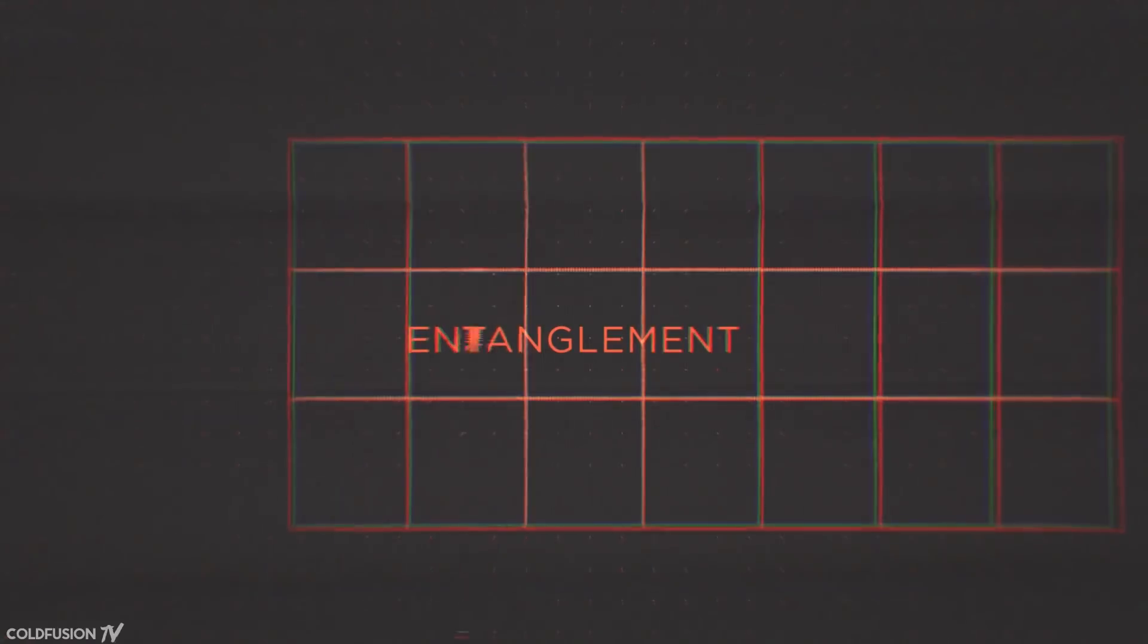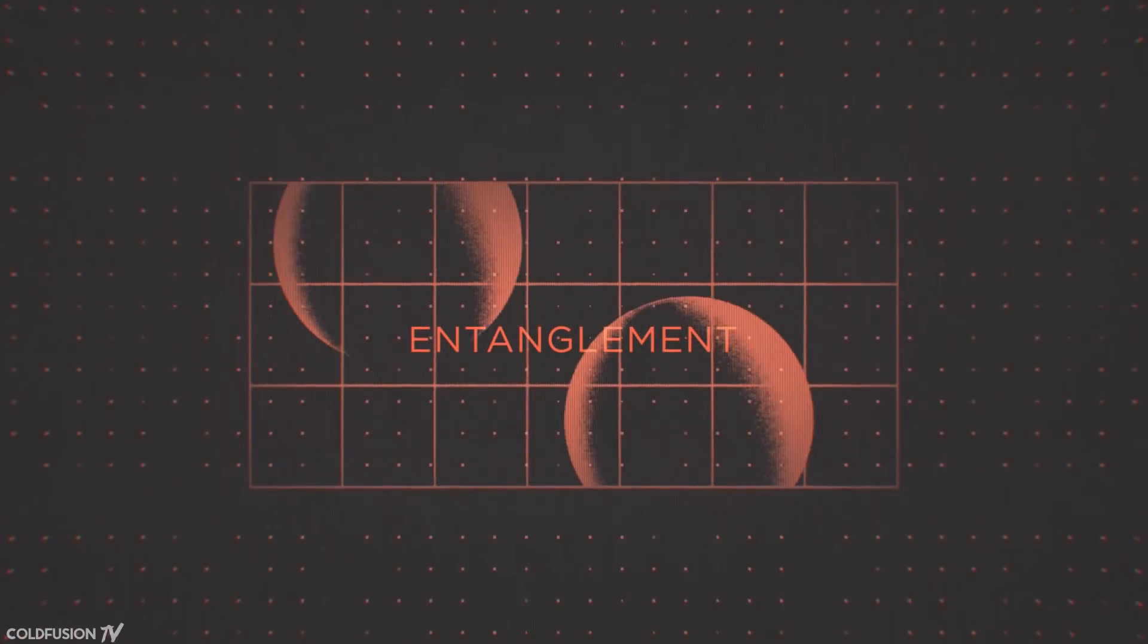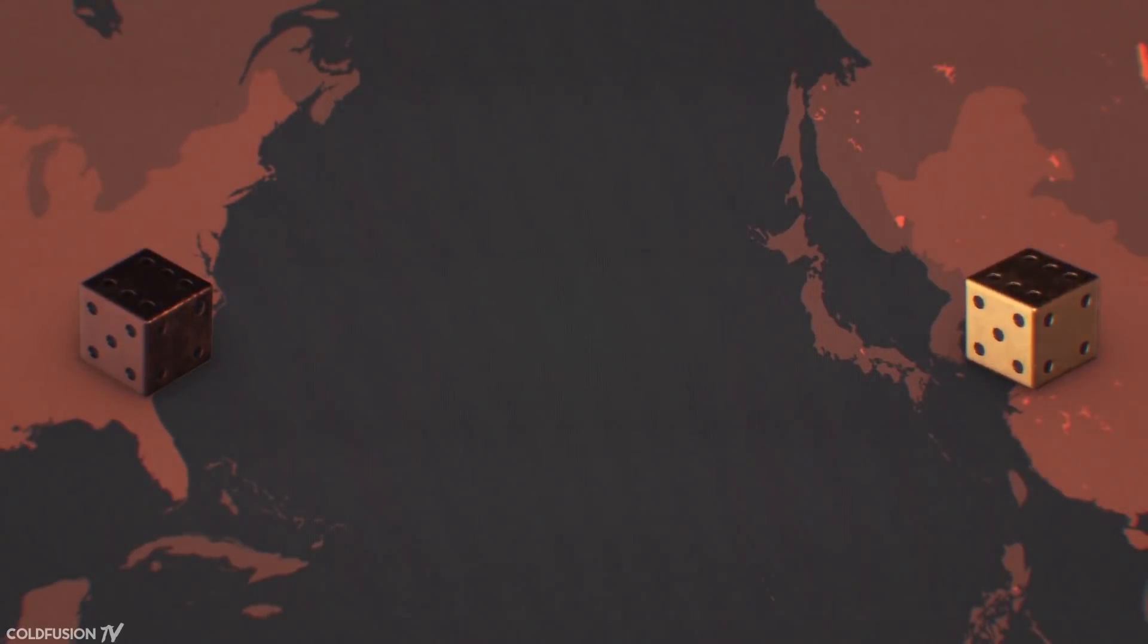Entanglement is another phenomenon where two particles can be linked so that one particle always gives the same outcome as the other. Imagine two quantum entangled dice. Even if they were separated on opposite sides of the Earth or even universe, when rolled, they would show the same result as each other every single time.